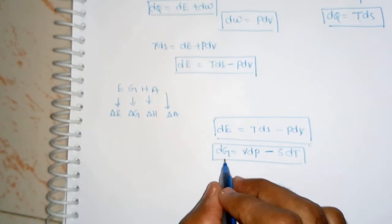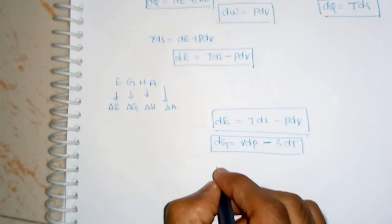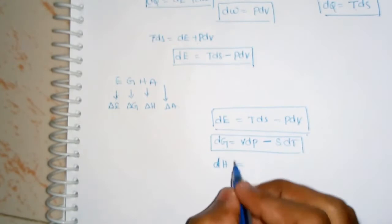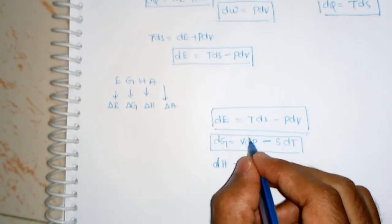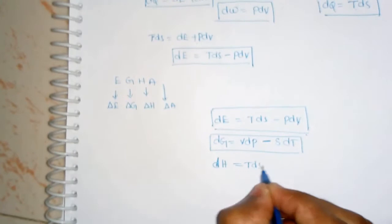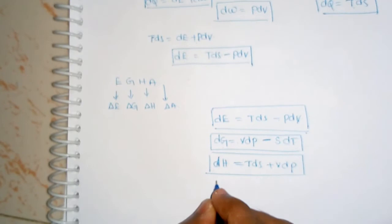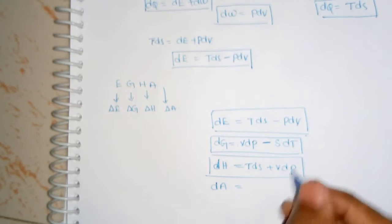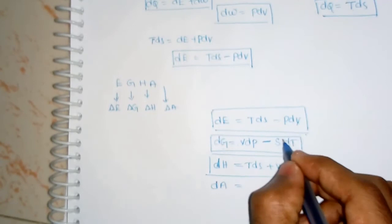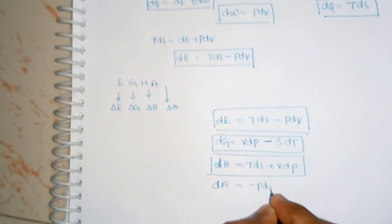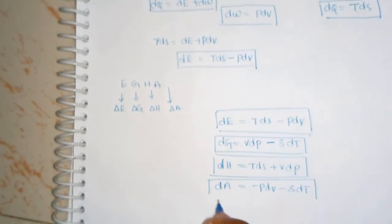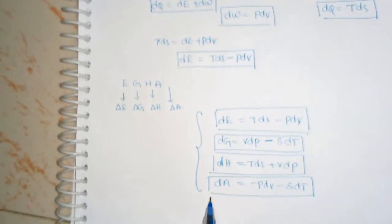Another relation, DH for small quantities, can be obtained by adding the first positive terms from the above relations, that is TDS and VDP, giving DH = TDS + VDP. The final relation, DA (Helmholtz free energy) for small quantities, is obtained by adding the negative terms from the above two relations: DA = −PDV − SDT.